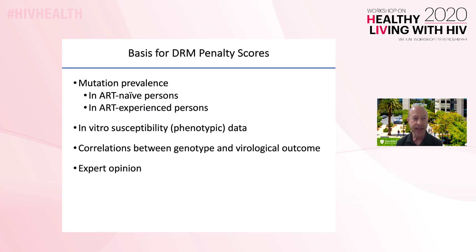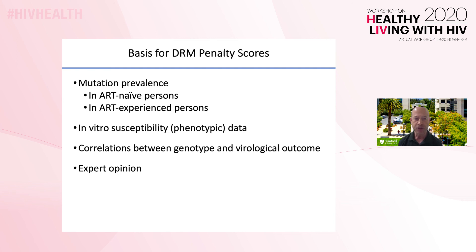Three main types of data are considered in developing the mutation penalty scores. The first is the extent to which a mutation is selected by a drug or drug class, as evidenced by the prevalence of a mutation in ART-naive and ART-treated individuals. The second is the extent to which a mutation reduces susceptibility in vitro. The third is the extent to which a mutation influences the virologic response to a drug. Although one might consider this third type of data to be the most important, it is incompletely available for most mutations and drugs. Finally, expert opinion gleaned from published papers and scientific meetings also plays a role.